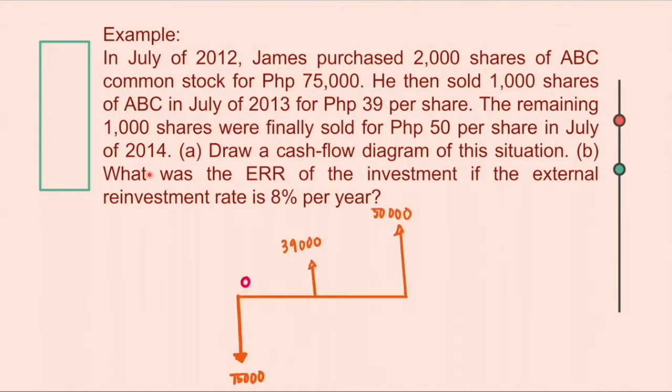So the first one here is we will make a cash flow diagram. $75,000 is the initial cost of the 2,000 shares that James had purchased. And then he sold the 1,000 shares for $39 per share and that is worth $39,000.